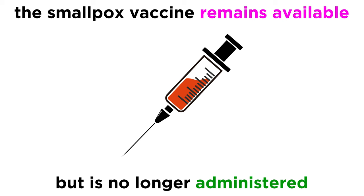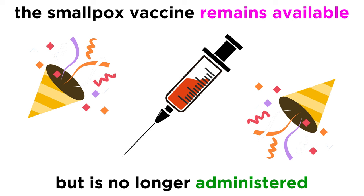Vaccines remain available to protect against smallpox, but routine vaccination for smallpox ended in the US in the early 1970s, since the disease was no longer a threat. This remains one of the greatest triumphs in the history of medicine, or even in the history of humanity in general.